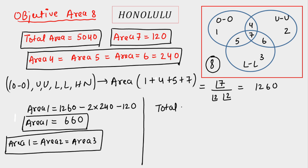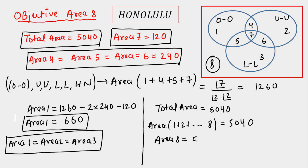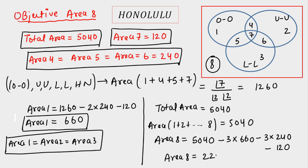The total area is 5040. Area 8 equals 5040, minus 3 times area 1 (which is 660), minus 3 times area 4 (which is 240), minus area 7 (which is 120). So area 8 = 5040 − 1980 − 720 − 120 = 2220. Area 8 represents the number of words in which no two alike letters are together — this is our final answer.